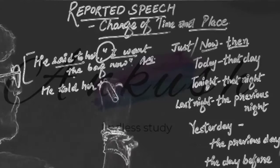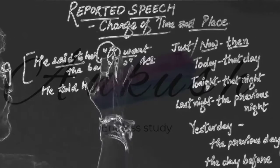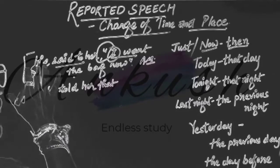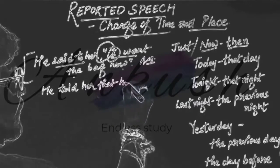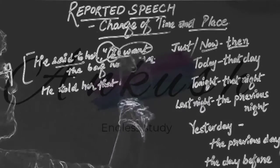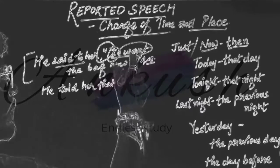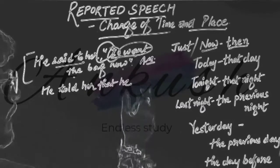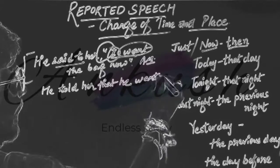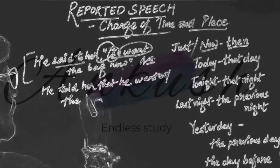We will remove the comma and inverted commas and use 'that'. 'I' is first person, so it will change according to the subject. The subject is 'he', so 'I' becomes 'he'. 'Want' is the verb — this is the first form of the verb.